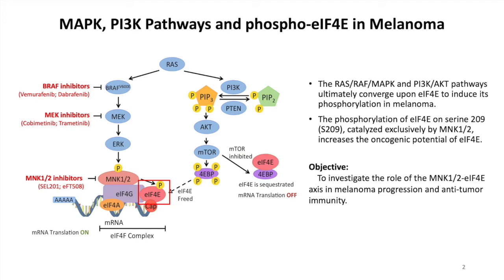In melanoma, two major pathways, the MAP kinase pathway and PI3K-AKT signaling, are constitutively activated through different mutations. These two pathways converge at a spot where a protein called EIF4E is phosphorylated.